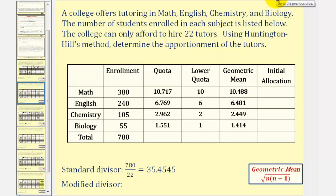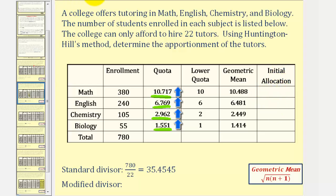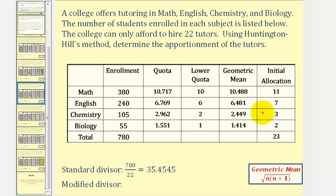Now for the next step, we compare the quota and the geometric mean. If the quota is larger, we round up; if the geometric mean is larger, we round down. For math, the quota is larger. For English, the quota is also larger. For chemistry and biology, the quota is still larger. So in each case we round the quota up for our initial allocation: math rounds to 11, English to 7, chemistry to 3, and biology to 2. The sum is 23 — too high, since we only have 22 tutors. So we need to modify the divisor, in this case increase it, and repeat the process.